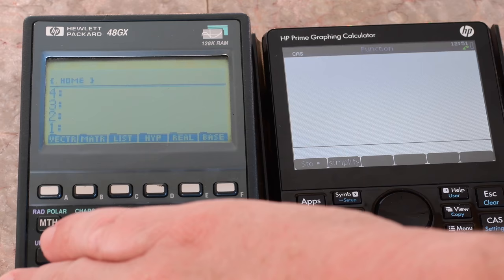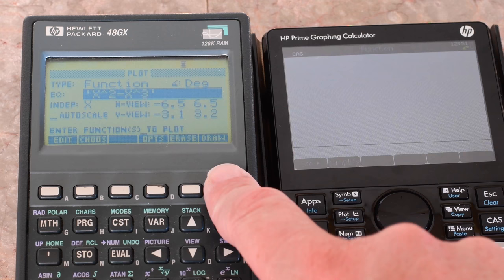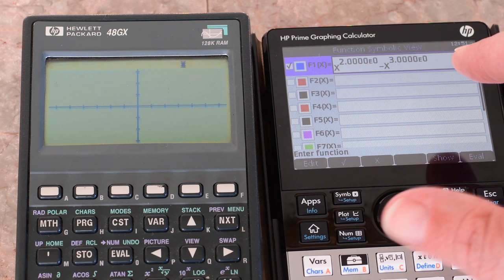I'm going to show again the speed here, this time on drawing a function. So on the 48, I'm going to hit plot. You see I've already put it in there. So I'm going to go ahead and hit draw. And then while we're waiting on that, we're going to go over here.